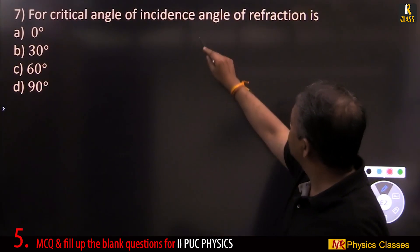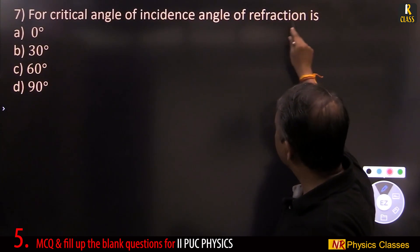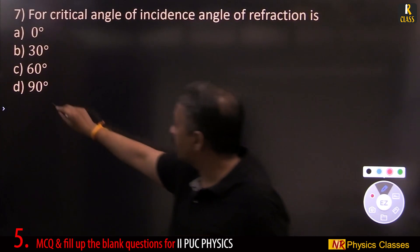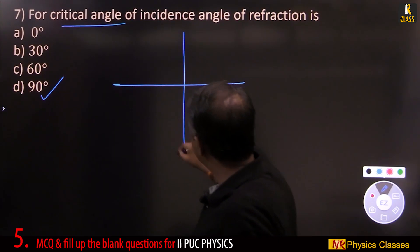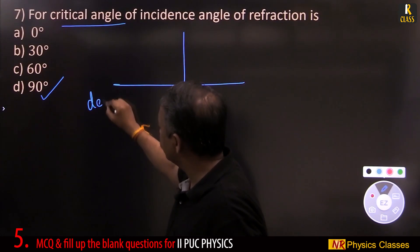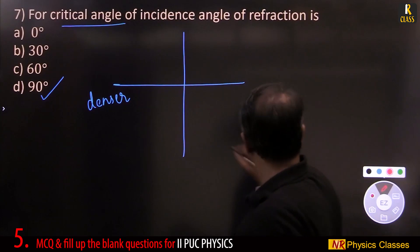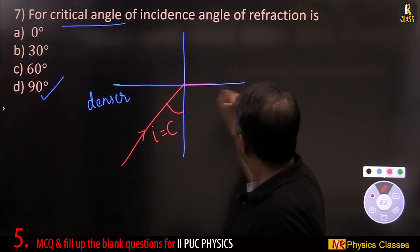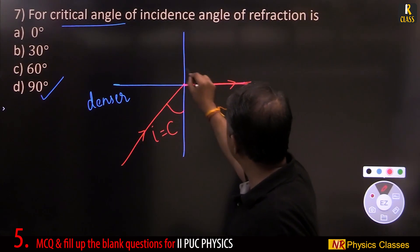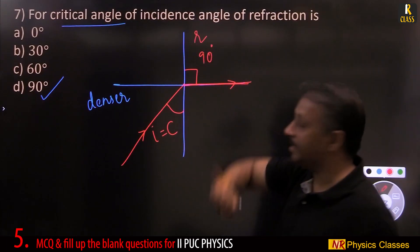For critical angle of incidence, angle of refraction is 90 degrees. Critical angle means angle of incidence in the denser medium. Angle of incidence in the denser medium is critical angle when angle of refraction is 90 degrees.